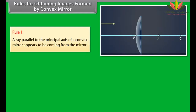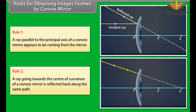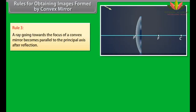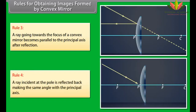Rules for obtaining images formed by convex mirrors: Rule 1: A ray parallel to the principal axis of a convex mirror appears to be coming from behind the mirror. Rule 2: A ray going towards the center of curvature of a convex mirror is reflected back along the same path. Rule 3: A ray going towards the focus of a convex mirror becomes parallel to the principal axis after reflection. Rule 4: A ray incident at the pole is reflected back making the same angle with the principal axis.